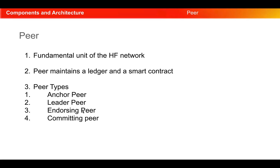Next is the endorsing peer. Endorsing peers have chaincode installed on them. Since they have chaincode installed, endorsing peers simulate and endorse the transactions. Next is the committing peer. The committing peer verifies endorsements and validates transaction results before committing the transaction to the blockchain.